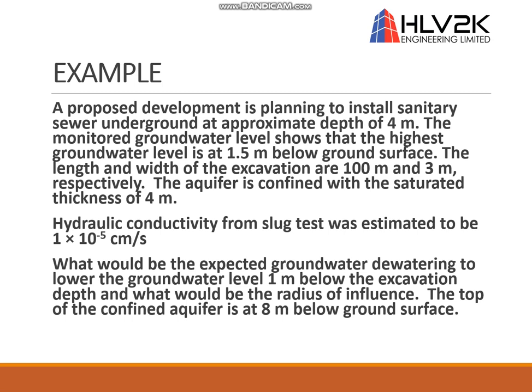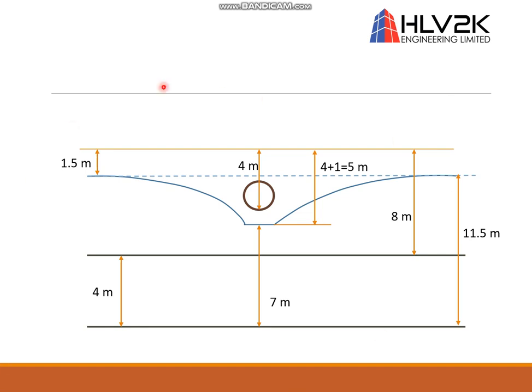Let's do one example. A development project is planning to install a sanitary sewer underground at approximately 4 meters depth. The monitored groundwater level shows the highest groundwater level is at 1.5 meters below the ground surface. The length and width of the excavation are 100 meters and 3 meters. The aquifer is confined with a saturated thickness of 4 meters. Hydraulic conductivity is estimated at 10 to the minus 5 centimeters per second. We want to know the expected groundwater dewatering rate to lower the groundwater 1 meter below excavation depth, and what the radius of influence would be. The top of the confined aquifer is at 8 meters below ground surface.